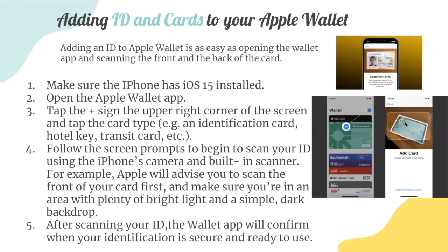First, we'll cover how to add ID cards to your Apple Wallet. Open the Apple Wallet app, which should be pre-installed. If it's not, you can double-check the App Store, and if you don't see it, your phone might be too old. Once you've opened the app, you'll see a little plus sign at the bottom left. Tap that and choose which kind of card you're going to add — an identification card in this example. You'll see some prompts on your screen and can use your iPhone's camera. Position your card in the square, making sure you're in an area with lots of bright light and a simple backdrop so the phone knows what your card is. Once your phone has scanned it, you'll receive a confirmation message by email.